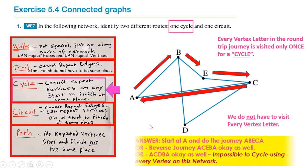You can also go backwards — A, C, E, B, A is also okay. That's another valid answer. It's impossible on this network to do a cycle using every vertex — you can try, but it won't work. There are multiple answers; the key is going from A back to A visiting each dot only once.